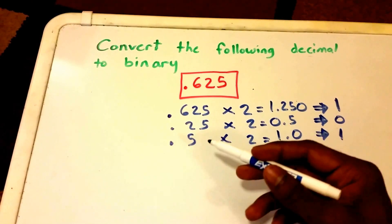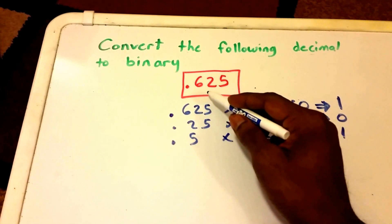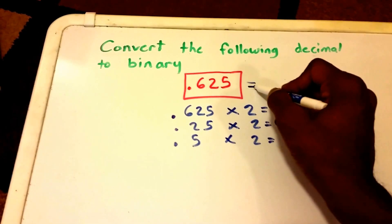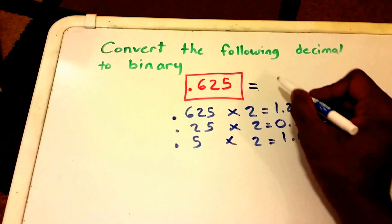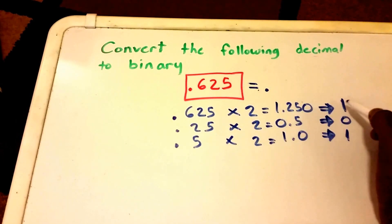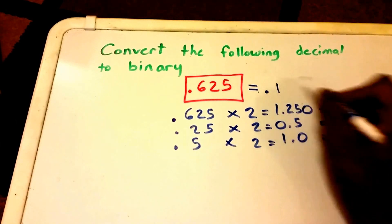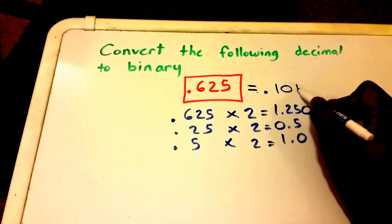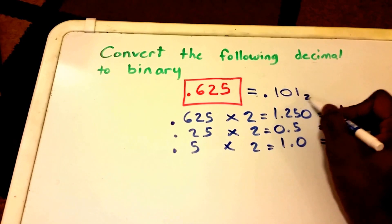This tells us that 0.625 in base 10 to binary is equal to 0.101 in binary or base 2.